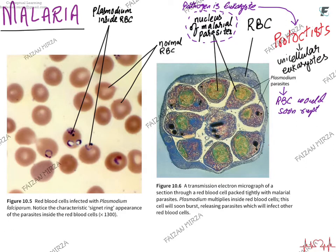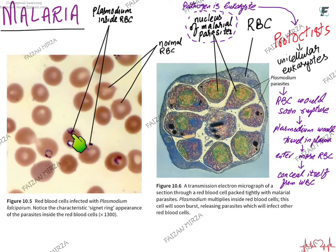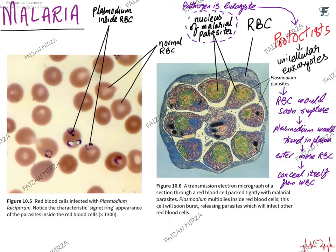The plasmodium lives in the red blood cells, and the red blood cell would soon rupture. When it ruptures, plasmodium travels freely in plasma and enters more red blood cells, eventually concealing itself from white blood cells. These malarial plasmodiums are very well hidden from white blood cells inside the red blood cells. When the red blood cell gets ruptured, the malarial plasmodium comes out and stays in plasma for some time — during which it is visible to the white blood cell. The white blood cell can attack it, but soon it hides in a new red blood cell, causing that cell to rupture as well.